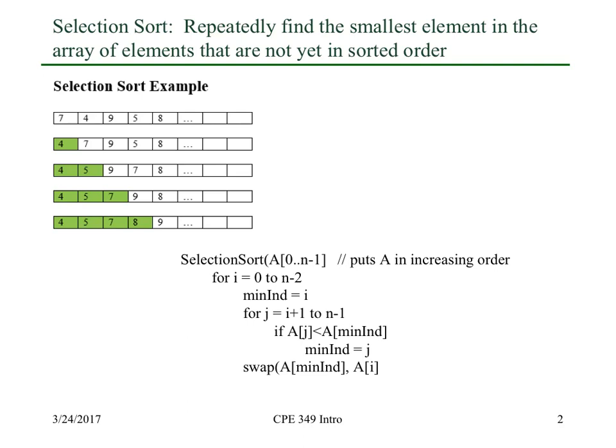We want to look at selection sort, a fairly straightforward, naive sorting algorithm. The way selection sort works is that we take the list here, and we look through the whole list and find the smallest element. So here that smallest element would be four. Then we swap it with what's in the position where it should go. We put the four as the first entry, and seven as the next entry.